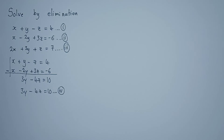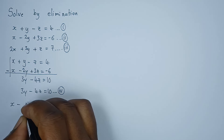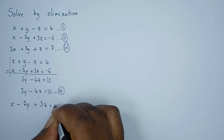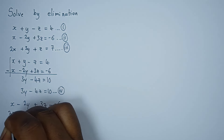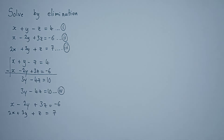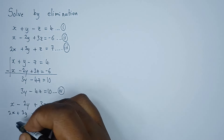Now that we have equation four, let's create equation five. To form equation five I can choose a pair: equation one and three, or equation two and three. I'll go with equations two and three. Equation two is x minus two y plus three z equals negative six, and equation three is two x plus three y plus z equals seven. These two equations do not have the same coefficient for x, so I need to adjust.